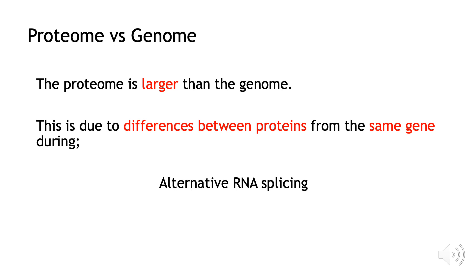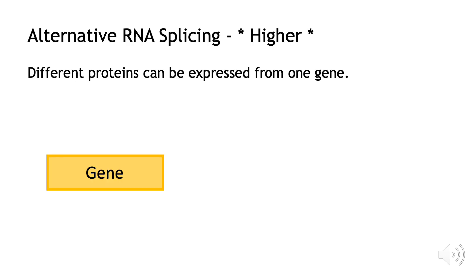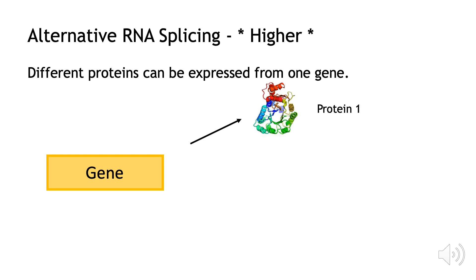This is primarily due to a process called alternative RNA splicing, which allows many different proteins to be made from the same one genetic code. This is when different proteins can be expressed from one gene. So if you take the yellow gene here, its genetic code can make protein 1, but the same code in a different combination can make protein 2, and then if you change the sequence of the code again, this can make protein 3.